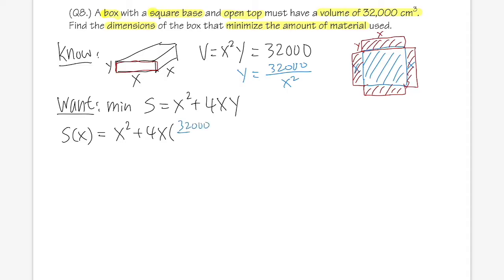Again, do some algebra first. Surface area is equal to x² plus—well, we can cancel out this x with one of them—and then 4 times 32,000, we get 128,000 with x on the bottom. That's right, yes, x to the negative one. Then take the derivative.